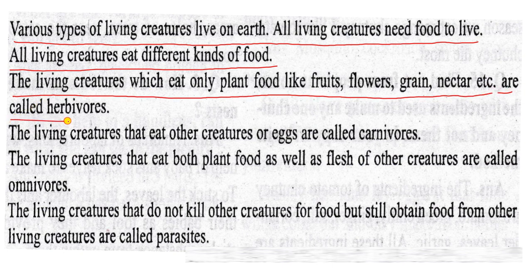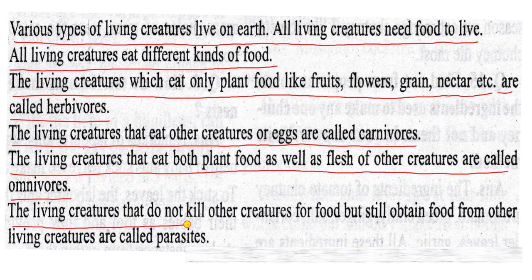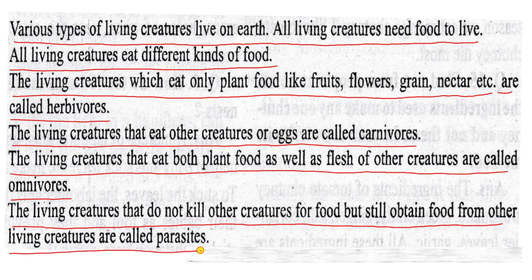The living creatures that eat other creatures or eggs are called carnivores. The living creatures that eat both plant food as well as flesh of other creatures are called omnivores — we are omnivores. The living creatures that do not kill other creatures for food but still obtain food from other living creatures are called parasites.